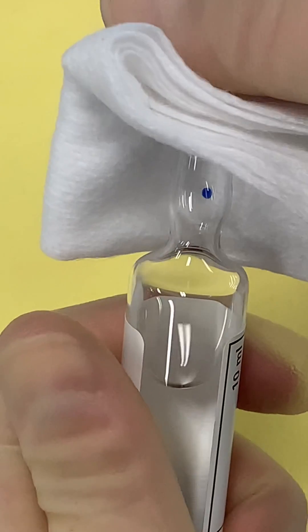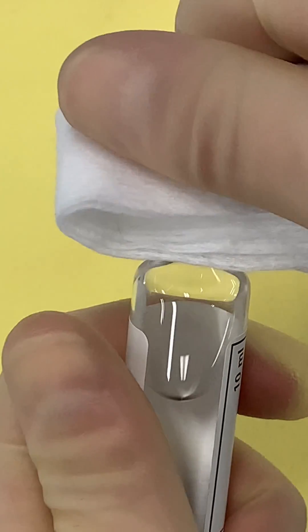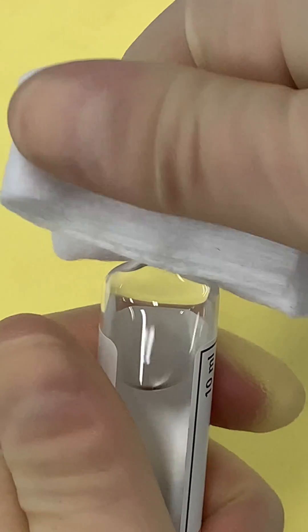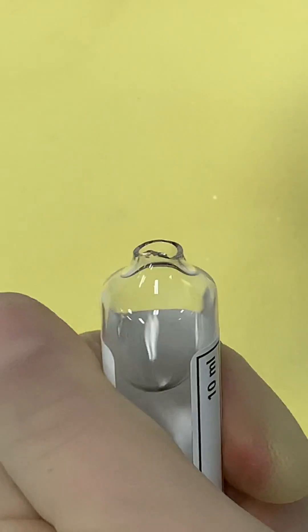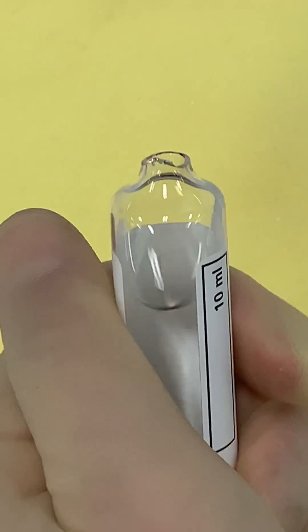Then hold it with the blue dot facing away from you and grasp the tip with a sterile swab. Snap the neck by bending the tip towards you. This way any glass particles will fly away from you and you're less likely to be injured.